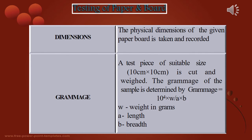Specific tests for paper and board include a dimensions test, where the physical dimensions of the paper board are recorded. For the grammage test, a test piece of 10 × 10 cm is cut and weighed. Grammage is calculated using the formula: 10⁴ × W divided by A × B, where W is weight in grams and A and B are length and breadth.